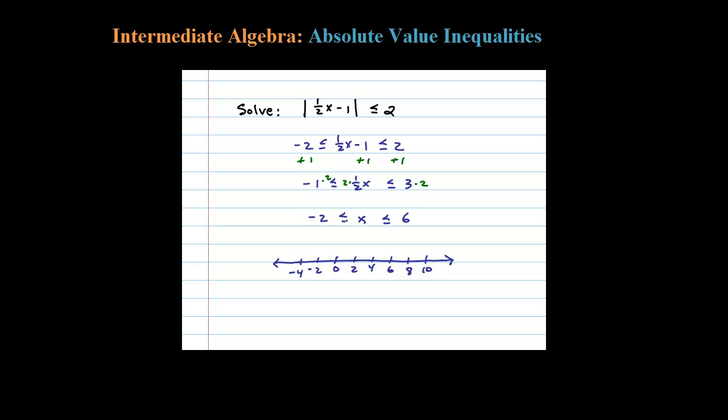And this time since there's an equal there, this is inclusive. I'm going to use a closed dot at negative 2 and a closed dot at 6, and I'm going to shade all the numbers greater than negative 2 and at the same time less than or equal to 6. Infinitely many solutions here.